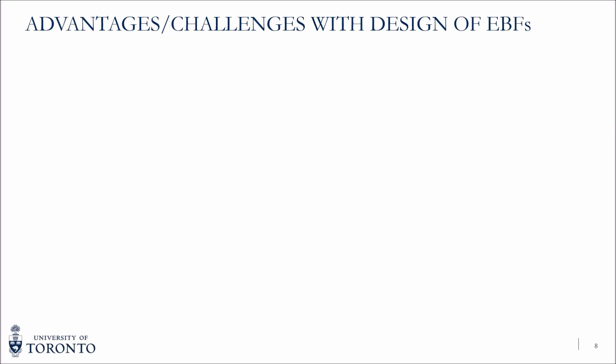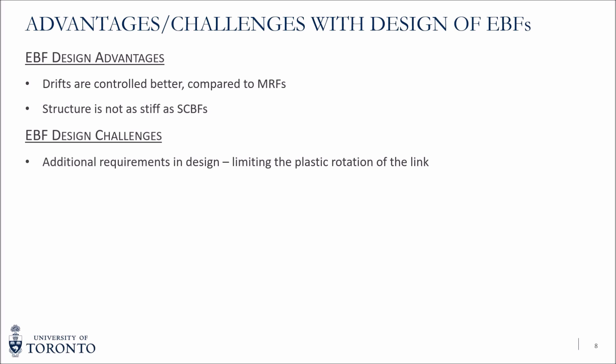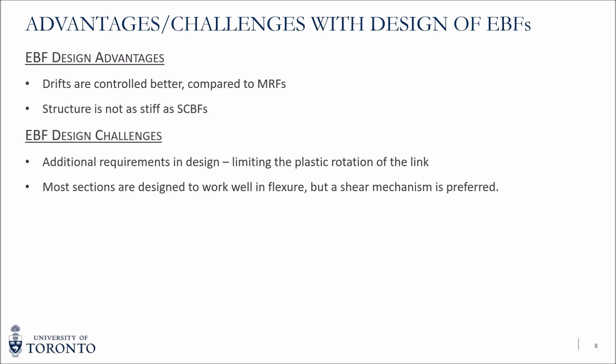If you look at the design of EBFs, there are certain advantages and challenges. When it comes to advantages, drifts are controlled better compared to MRFs, and the structure is not as stiff as SCBFs. However, there are some challenges. One is that as a structural engineer, you have another limit state to control, which is the plastic rotation of the link. Another problem is that most sections like W sections, HSS, and so on are designed to work well in flexure, but a shear mechanism is preferred, so we try to adjust the sections to perform better in shear by detailing them with stiffeners and welds.